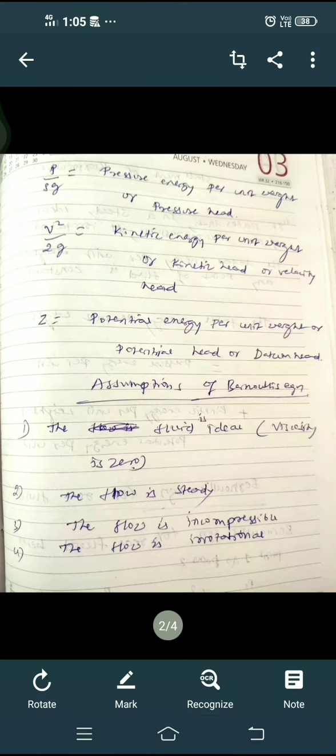For the incompressible flow, the density equals constant. The flow is irrotational. So these are the four assumptions of Bernoulli's equation.